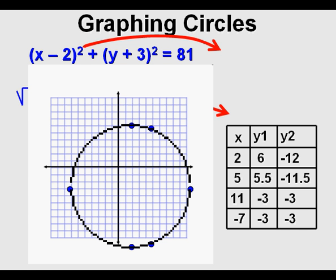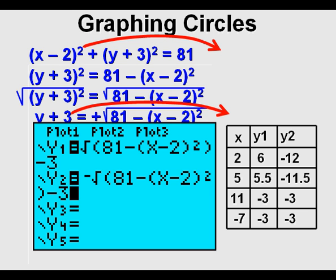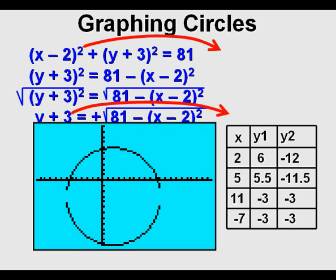In a graphing calculator, we can place the points, the plus and minus equations, in Y1 and in Y2, and then we can press graph to see it graphed. A standard window makes it look like an ellipse. If you go to zoom square or zoom 5, it adjusts the window to make X and Y values proportional.